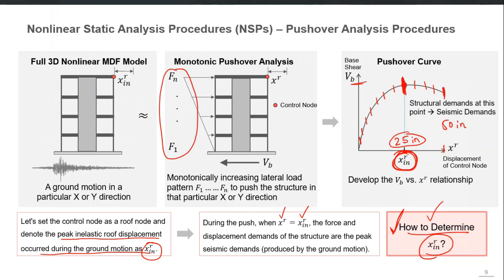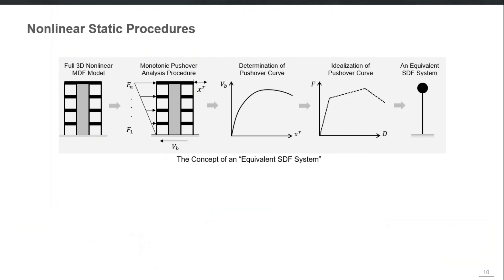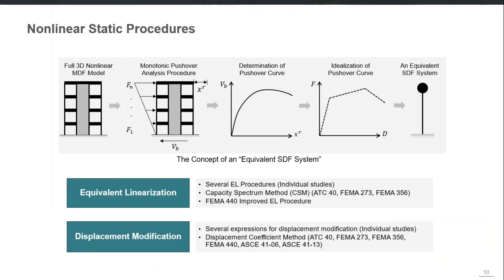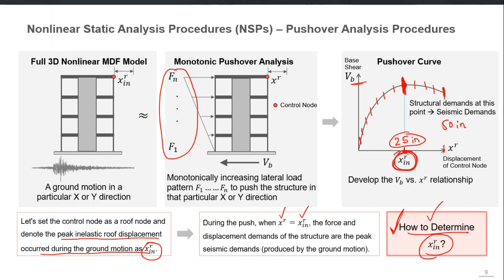If we know xrin — the inelastic roof displacement produced by the ground shaking — we come back to the pushover curve and extract all responses at that particular location. Those results are the approximate seismic demands the future earthquake would have produced. There are several methods to determine this target displacement, and xrin is sometimes called the target displacement because it is what we calculate first and then push our building up to that point.